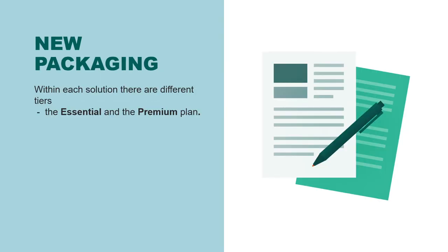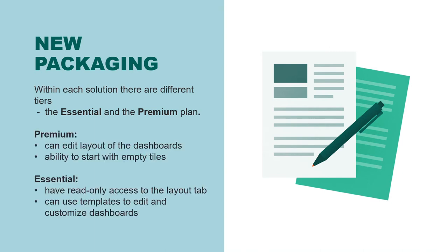It's also worth saying a little bit about the new SuperOffice 10 packaging. Some of the features you saw in the demo are based on the new user plans. Within each solution — sales and service — there are different tiers: the essential and the premium plan. The user plans contain CRM functionality that is user role-oriented and configurable. Dashboards, for example, are available for all users, but the ability to customize the layout requires a subscription to the premium plan. The ability to start with empty tiles is also linked to premium. The essential plan has read-only access to the layout tab, but you can still use templates to edit and customize dashboards. If you do not see this feature available, contact your sales rep in SuperOffice.